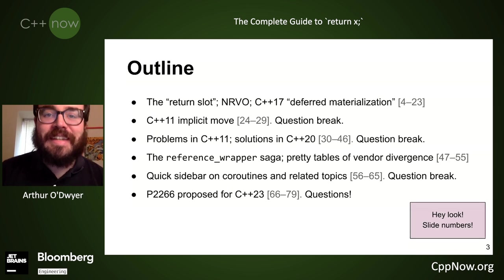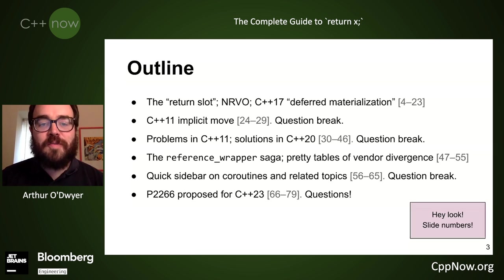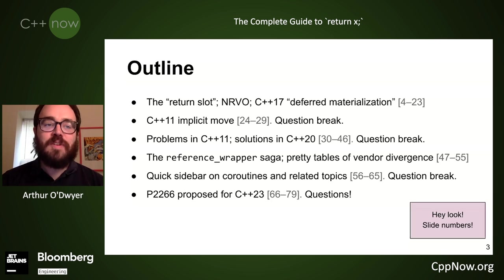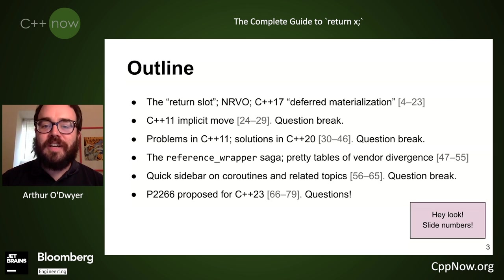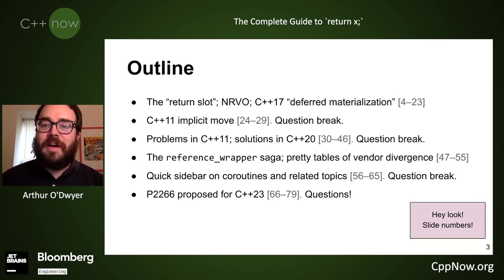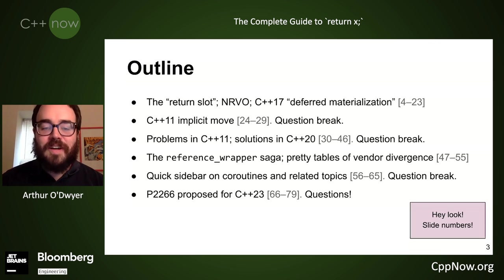Here's what we're going to talk about today: a complete guide to everything that might happen when you say 'return x'. We're not even going to talk about any other expression — just 'return x'. I'll walk you through the return slot, various optimizations, and in particular an optimization from C++11 known as implicit move. Then we'll talk about how that evolved from C++11 to C++20 and beyond. I have a proposal before the committee likely to get adopted for C++23.